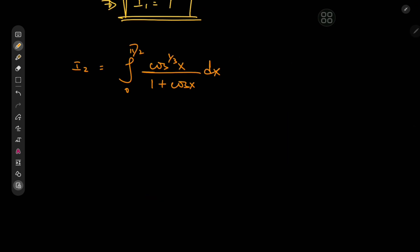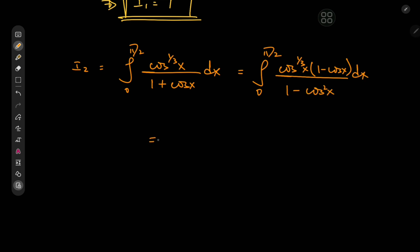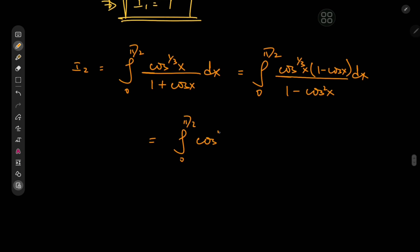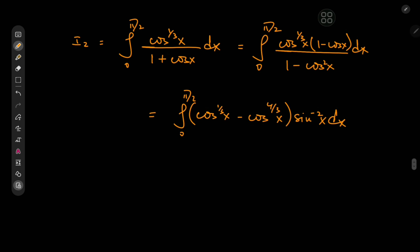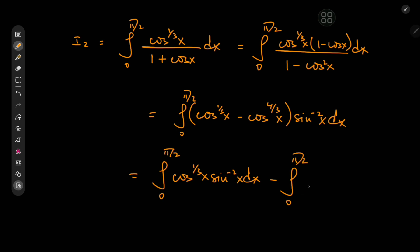I₂ is quite interesting. Again we expand by (1 minus cos x) first, giving the integral from 0 to π/2 of cos^(1/3) x · (1 minus cos x) divided by (1 minus cos²x) dx. This means we have the integral from 0 to π/2 of (cos^(1/3) x minus cos^(4/3) x) times sin^(-2) x dx. Using linearity, this splits into the integral of cos^(1/3) x · sin^(-2) x dx minus the integral of cos^(4/3) x · sin^(-2) x dx, both from 0 to π/2.